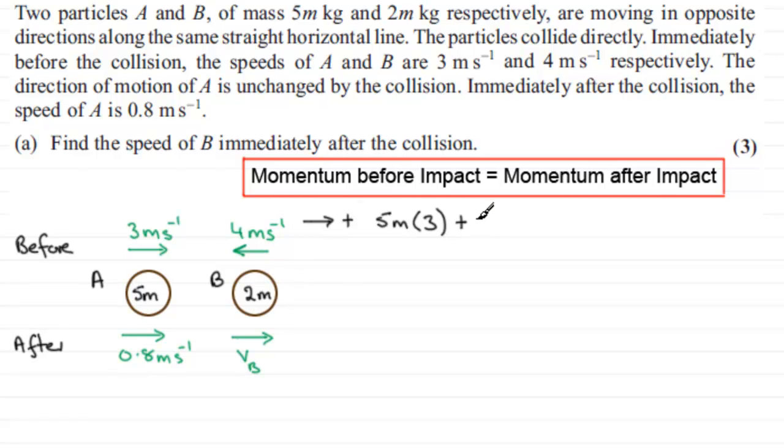Then we add this to the momentum of B, so it's going to be the mass 2m, and we multiply this by its velocity. Now the speed is 4 meters per second, but you can see it's going to the left in the opposite sense to what we've got up here. So the velocity will now be minus 4. These are places where people do tend to get caught out, so take care over this.